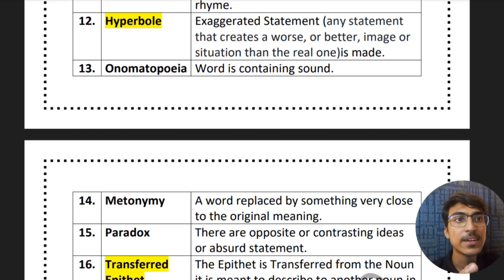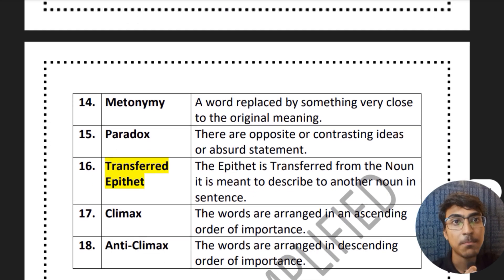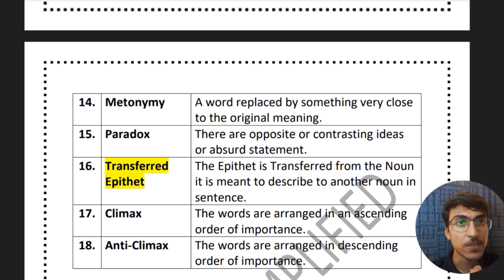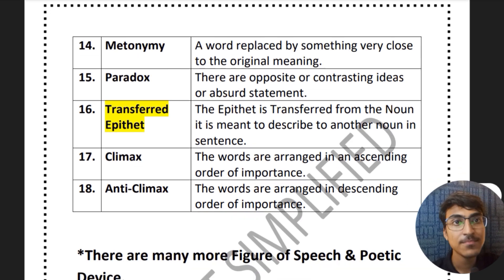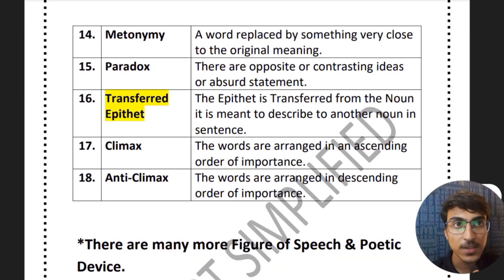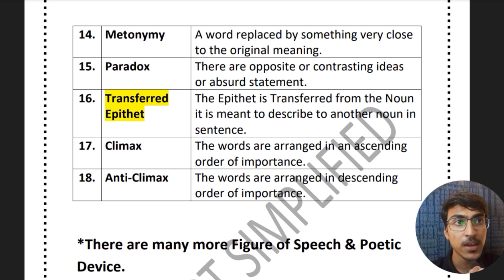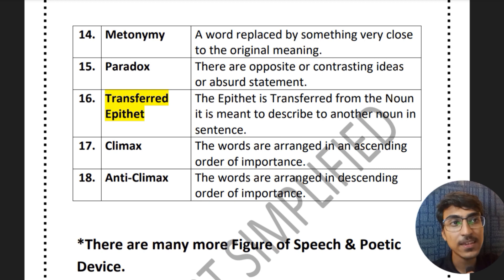Onomatopoeia — words that contain a sound. Then metonymy — a word replaced by something very close to the original meaning. Then paradox — these are opposite or contrasting ideas, or abstract statements. Paradox means opposite thinking — you have contrasting ideas.